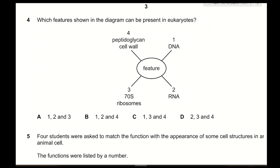Question 4: Which features shown in the diagram can be present in eukaryotes? DNA — found in the nucleus as linear DNA and in mitochondria or chloroplasts as circular DNA, so correct. RNA — present as ribosomal RNA and mRNA, both present in eukaryotic cells, so correct. 70S ribosomes — present in chloroplasts and mitochondria, so correct. Peptidoglycan cell walls — only present in prokaryotic cells, so incorrect. The correct answer is A.